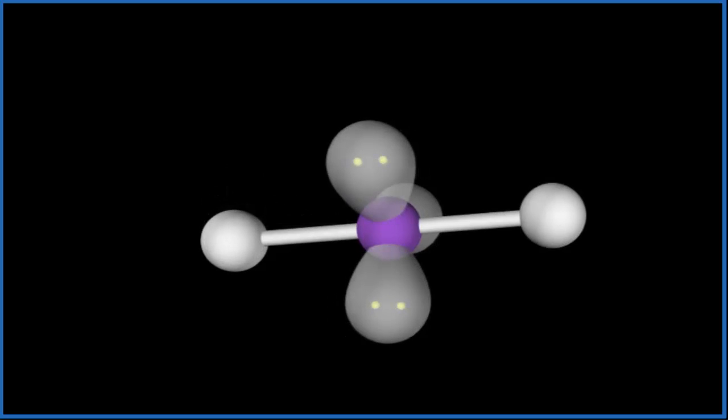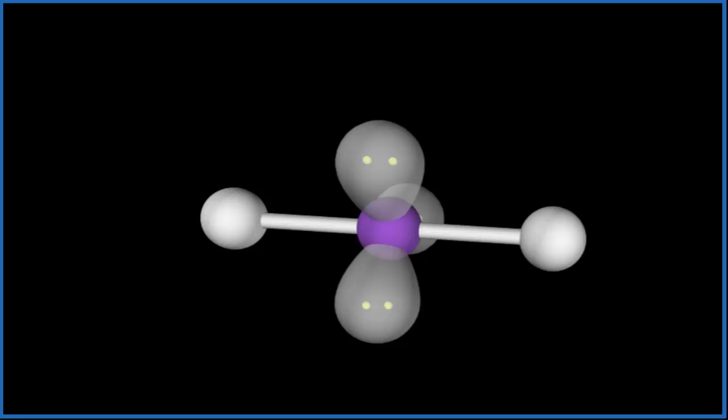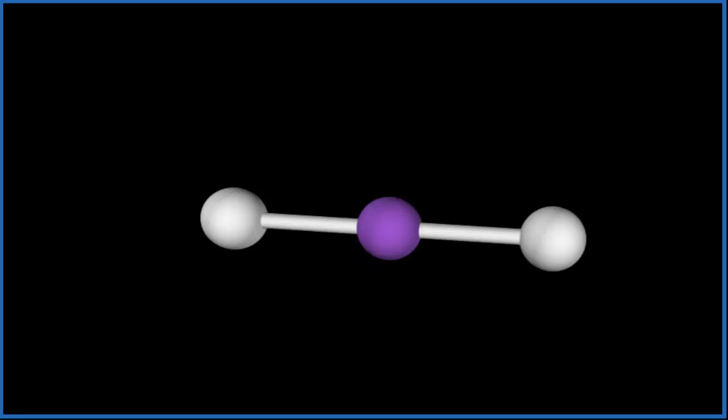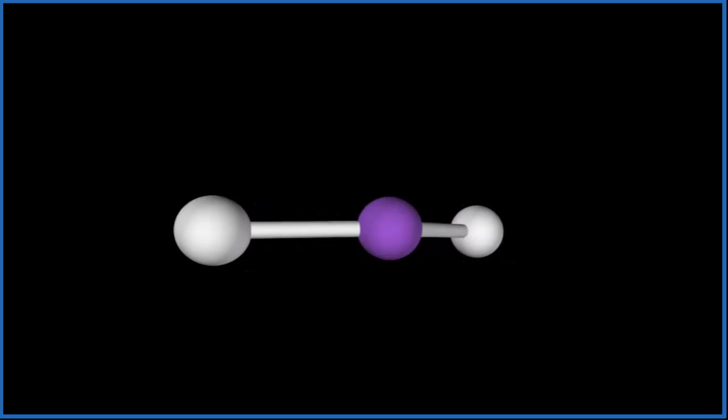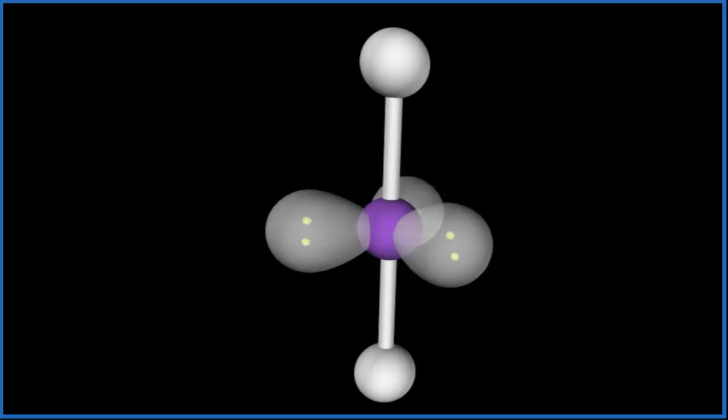And that gives us the molecular geometry for XEF2. And you can see right away there's just a line right through it - it's linear. If we hide the lone pairs, there's your linear molecular geometry for XEF2. If we wanted to look at the electron geometry, let's put the electrons back. You would end up with the trigonal bipyramidal electron geometry.